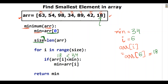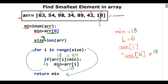Is 18 smaller than 34? Yes — so it goes into the if condition and 18 is assigned to the min variable. The loop then tries to continue but finds no more elements, so it exits and returns min as 18.